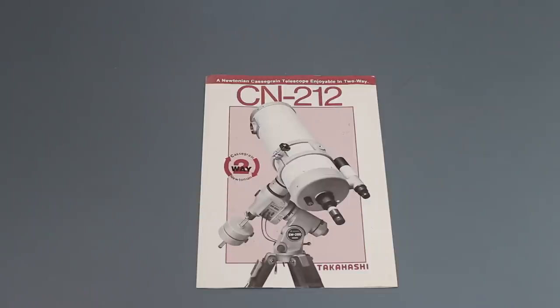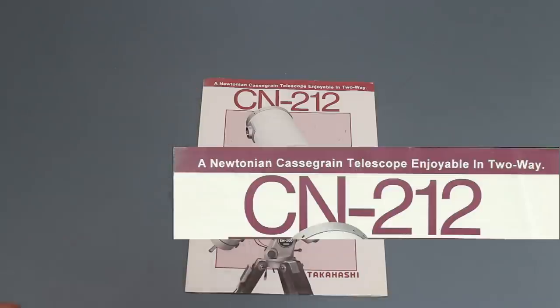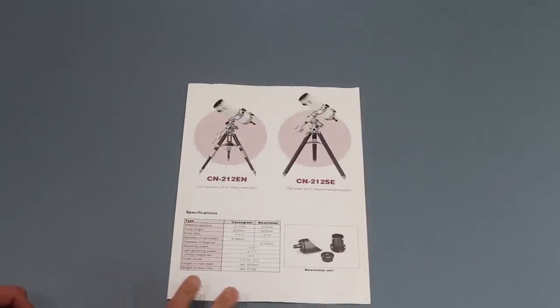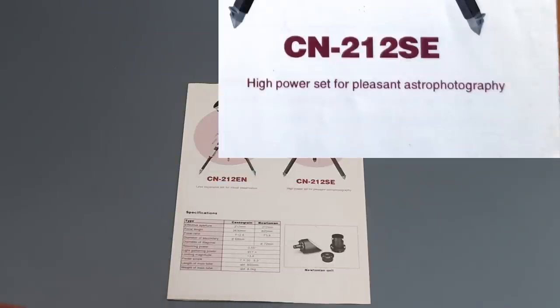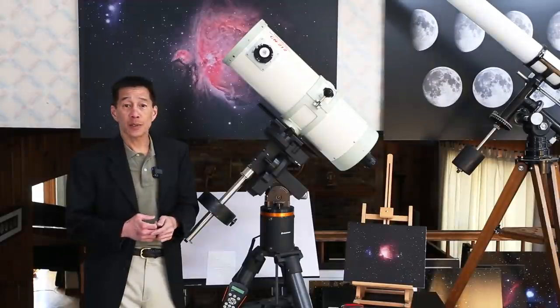So I like collecting old telescope brochures and here's one for the CN-212, a Newtonian cassegrain enjoyable in two-way. The back of the brochure also promises it's good for pleasant astrophotography. So the telescope is listed as a Newtonian and a cassegrain.